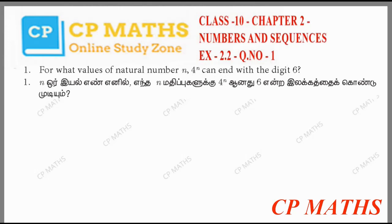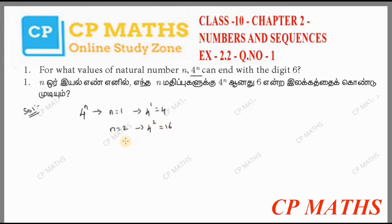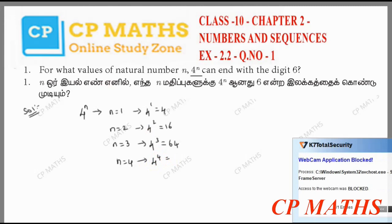4^n is a normal number. If we compute the values: when n=1, 4^1 is 4. When n=2, 4^2 is 16. When n=3, 4^3 is 16 into 4 is 64. When n=4, 4^4 is 256.